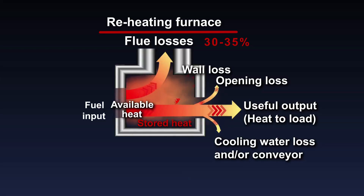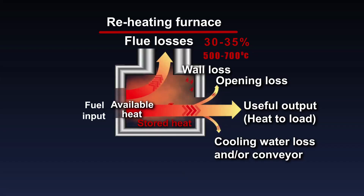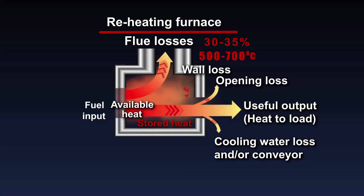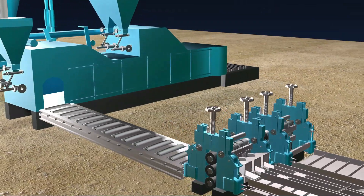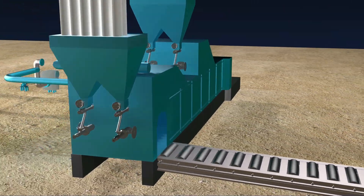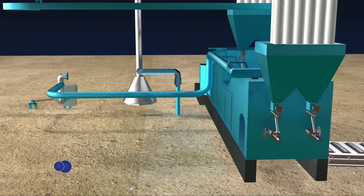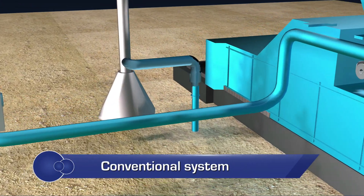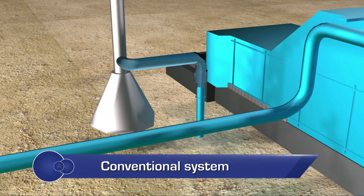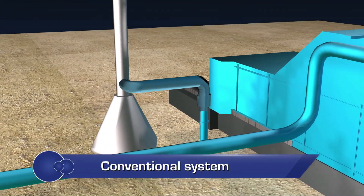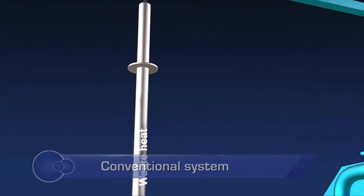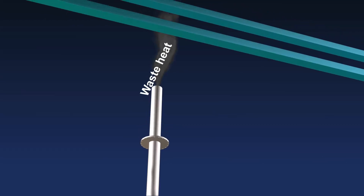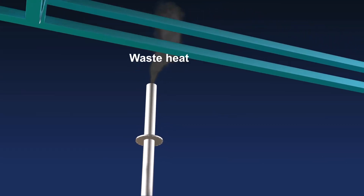Exhaust flue gas from the furnace at a temperature of 500 to 700 degrees Celsius has potential to be reused in the furnace. Traditionally, flue gases from the reheating furnace were let out into the atmosphere through the chimney, and thus significant heat of the flue gas was wasted.